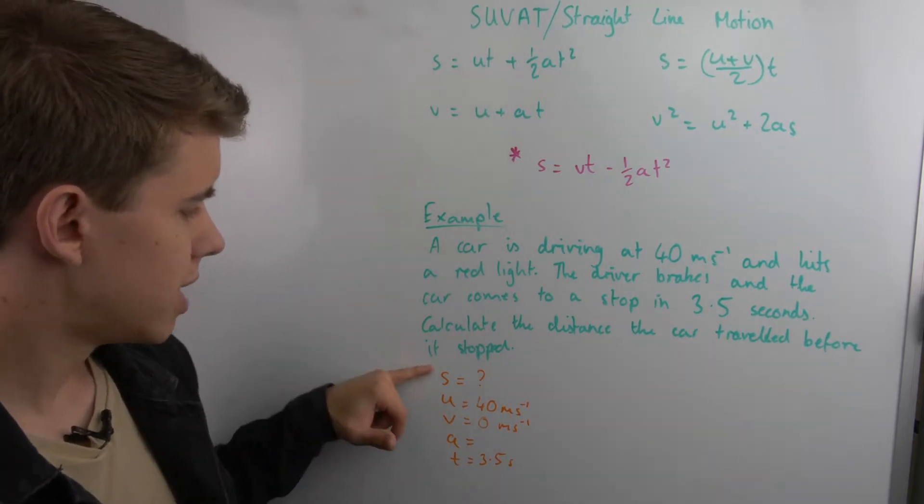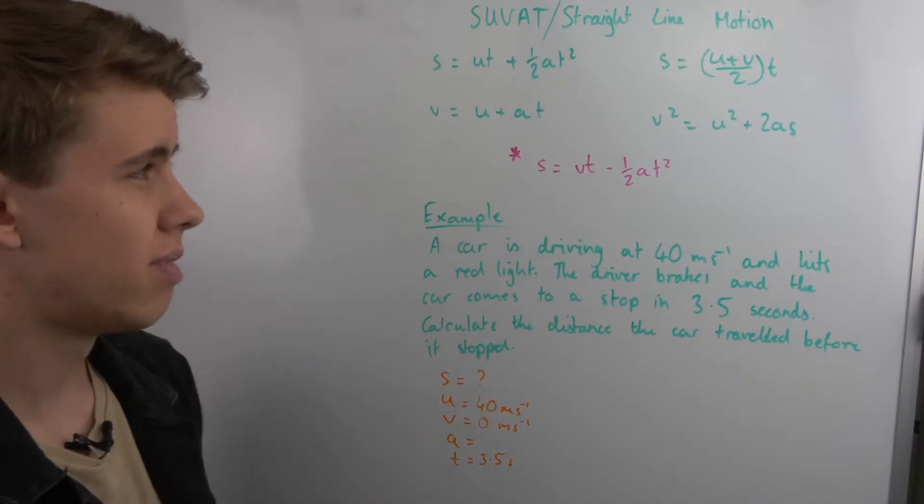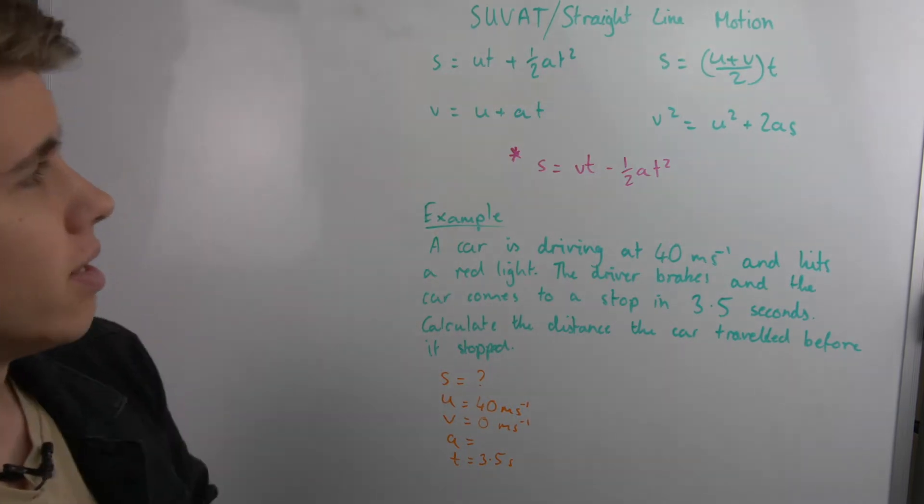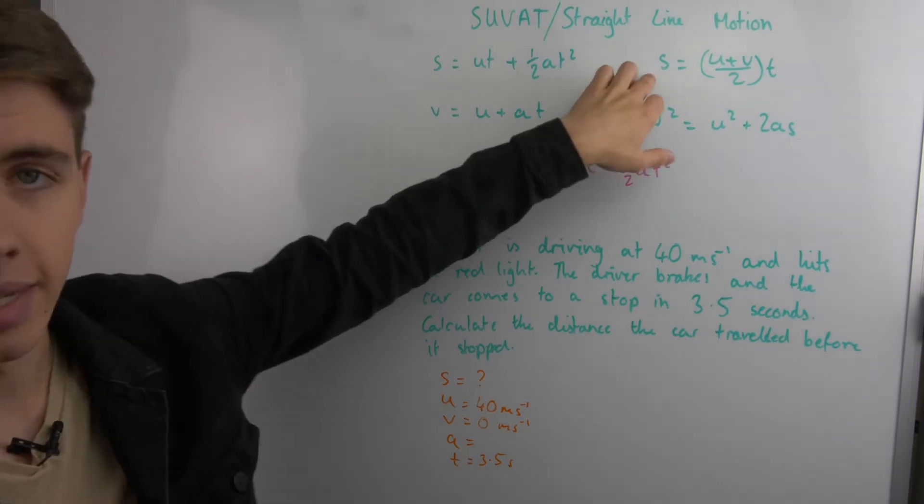So you can see we need S, we have U, we have V, we have T, and so we're getting rid of A. So then we look at our four SUVATs, and we say which one doesn't contain A? This one doesn't contain A, so this is what we're going to use to work out this question.